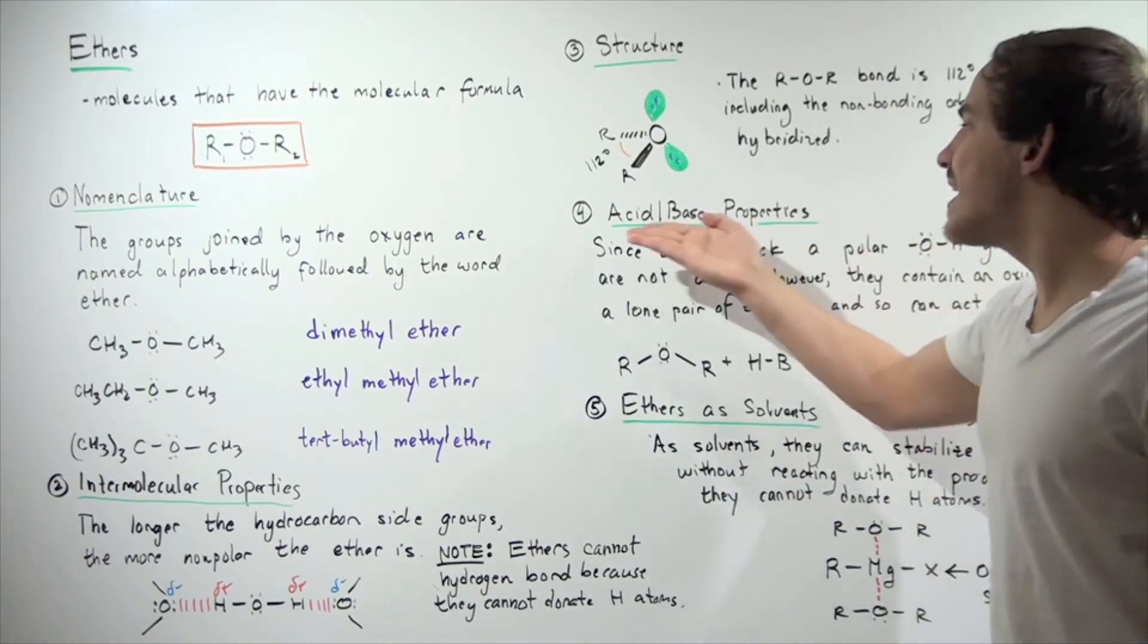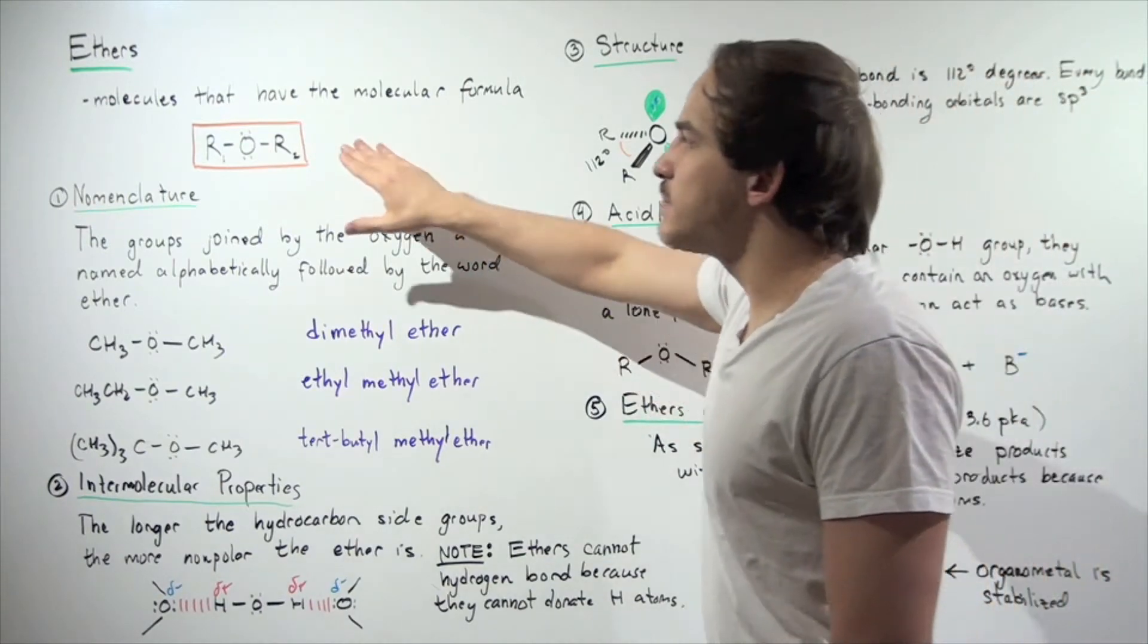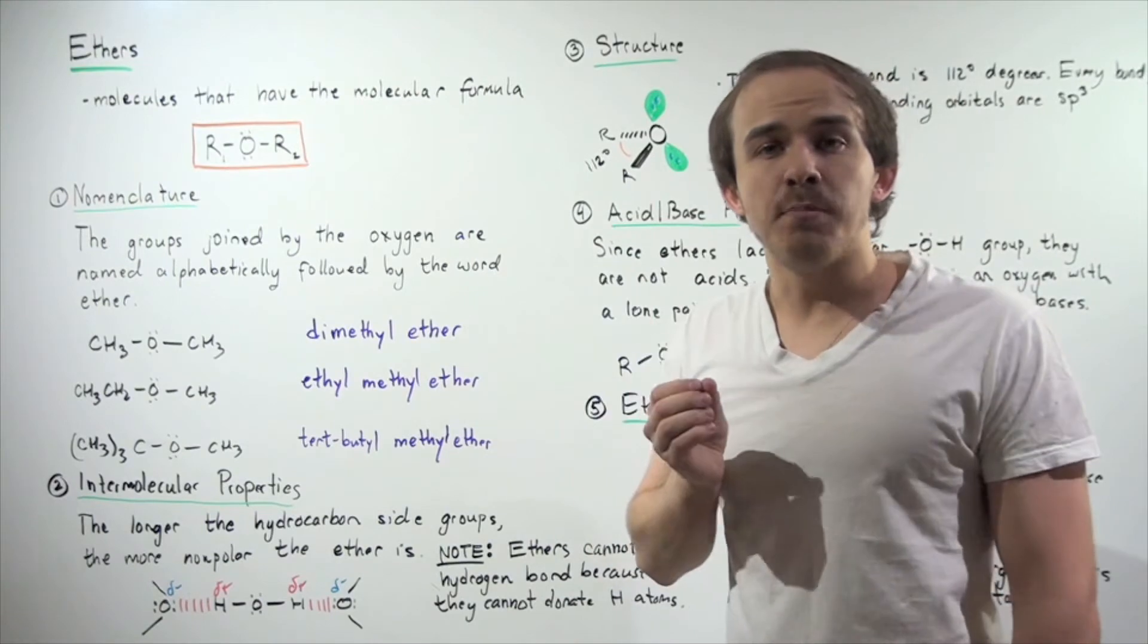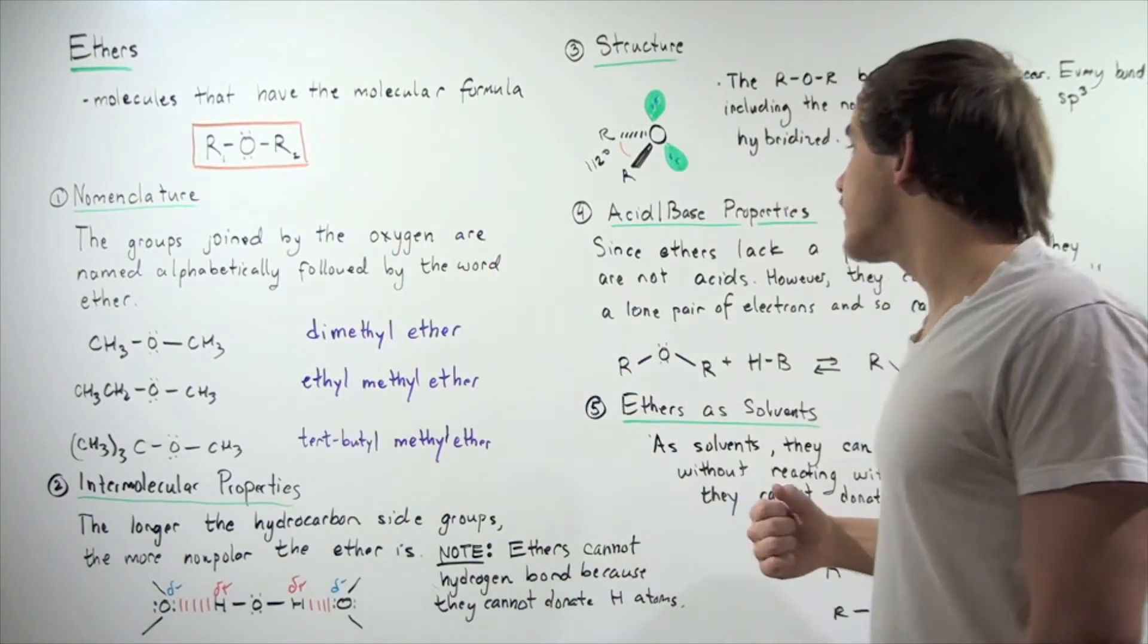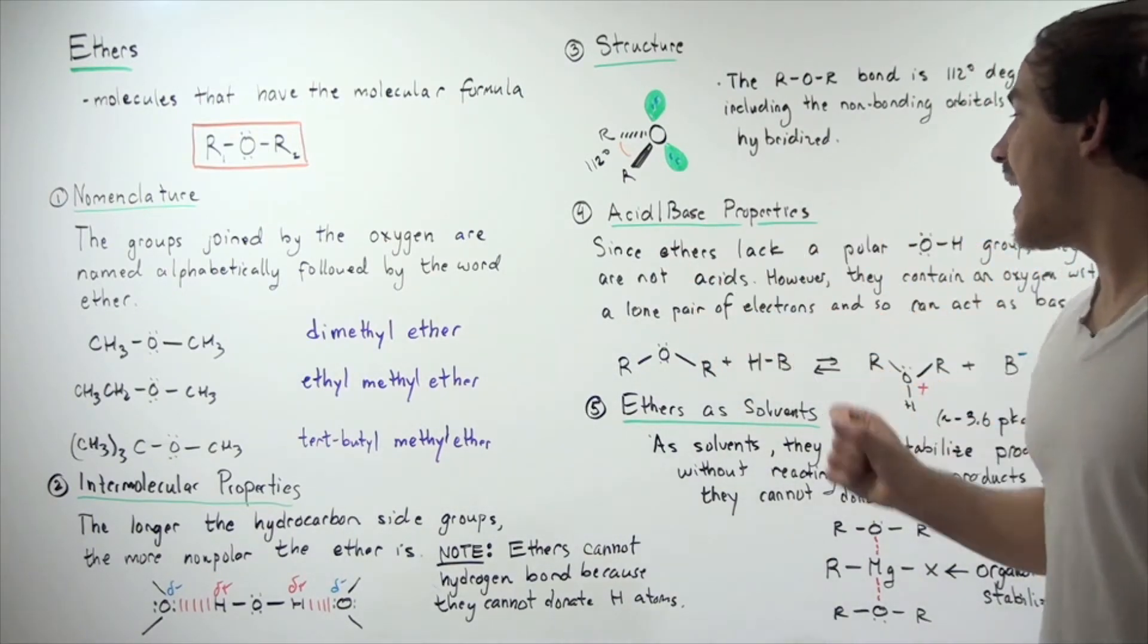Now let's discuss the acid-base properties. Earlier I said that ethers don't have a polar OH bond, which means they cannot donate an H atom. Since ethers lack a polar OH hydroxy group, they are not acids.